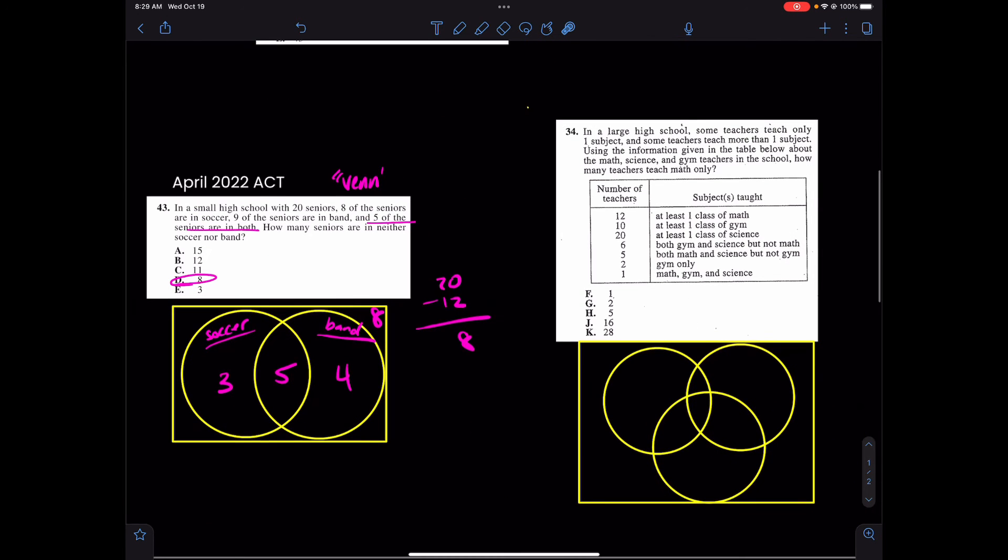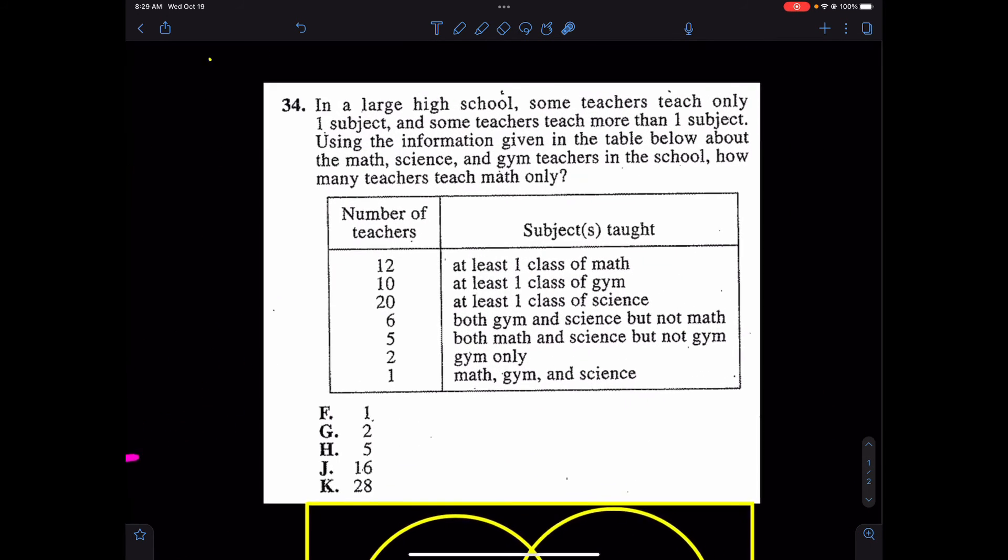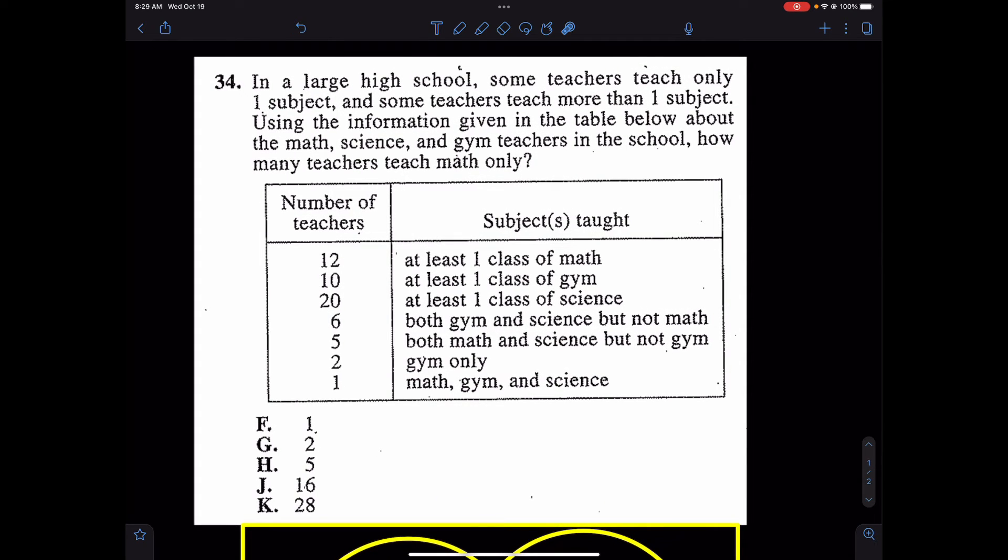Please let me know if that makes any sense in the comments. If you have any questions, leave them down below. But we have one last question coming to us from an older ACT. But they do ask this. I'll read it real quick. It says, in a large high school, some teachers teach only one subject and some teachers teach more than one subject. How many teachers teach only math? Again, how many teachers teach only math? So even before I know that this is a Venn diagram question, it says two in gym only, one in math gym and science, five in both math and science. Wow, this is really giving me Venn diagram vibes.